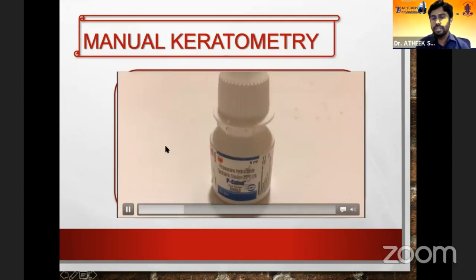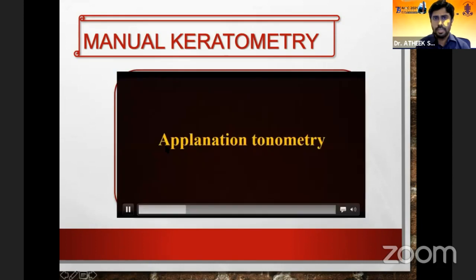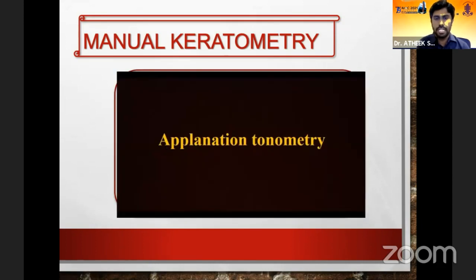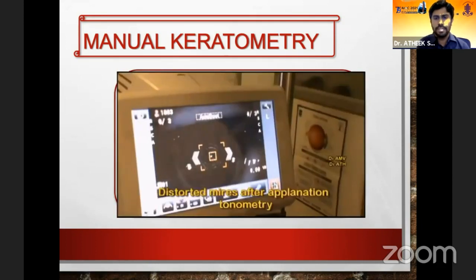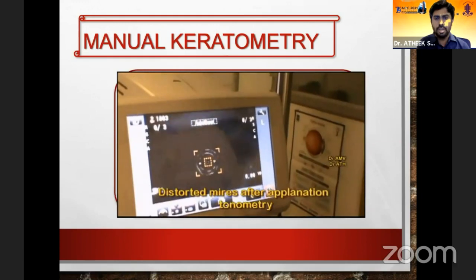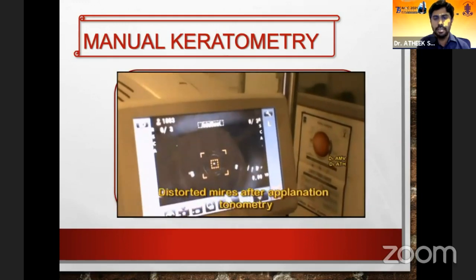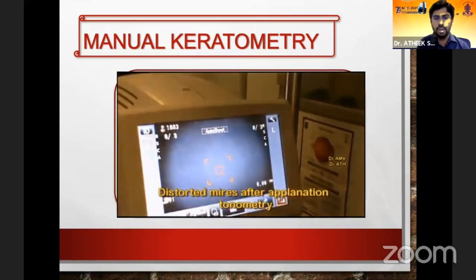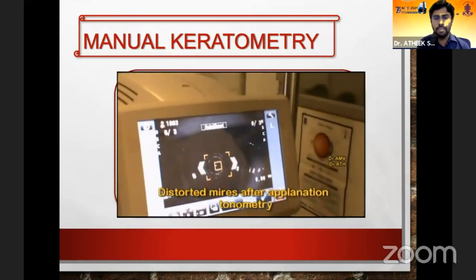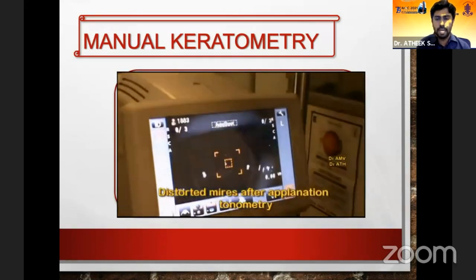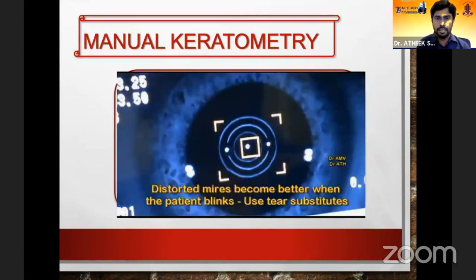The take-home message for manual keratometry is: do it on a virgin eye. Here you can see applanation tonometry being performed, and then an auto-K is attempted where the mires appear absolutely distorted.